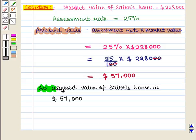So we can say that assessed value of Saira's house is $57,000.